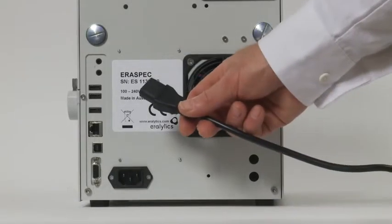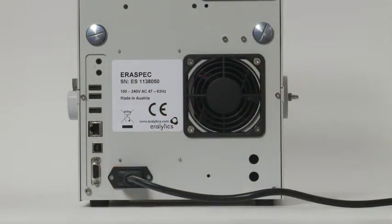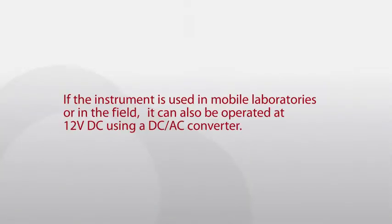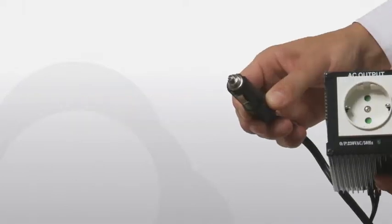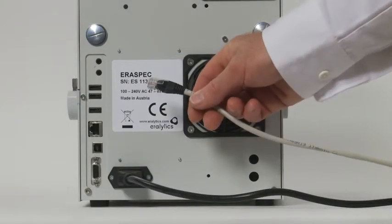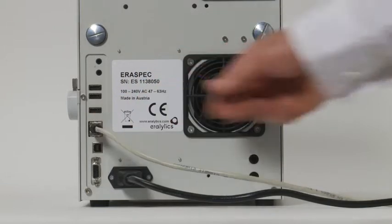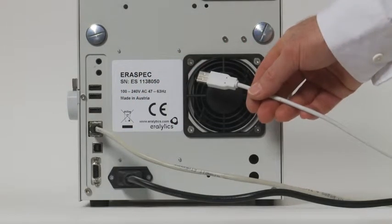Turn the instrument and connect the power cable to the plug on the rear side of the instrument. The AC input voltage can be anywhere between 85 and 264 volts. If the instrument is used in mobile laboratories or in the field, it can also be operated at 12 volts DC using a DC-AC converter.